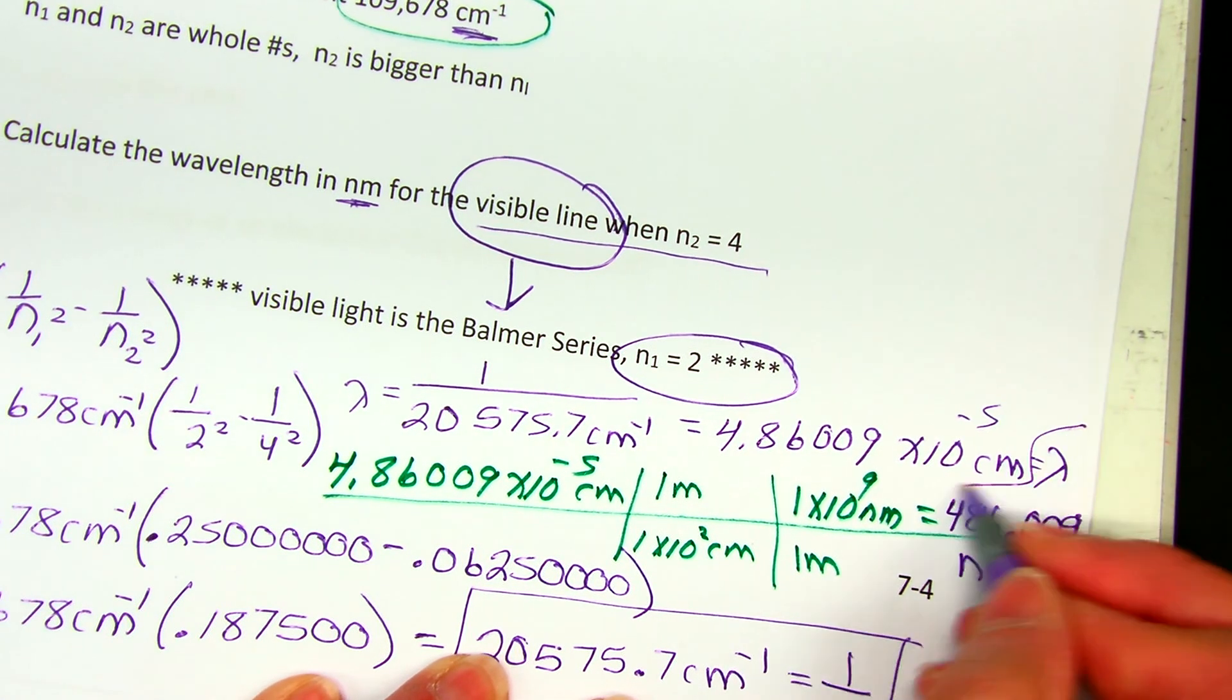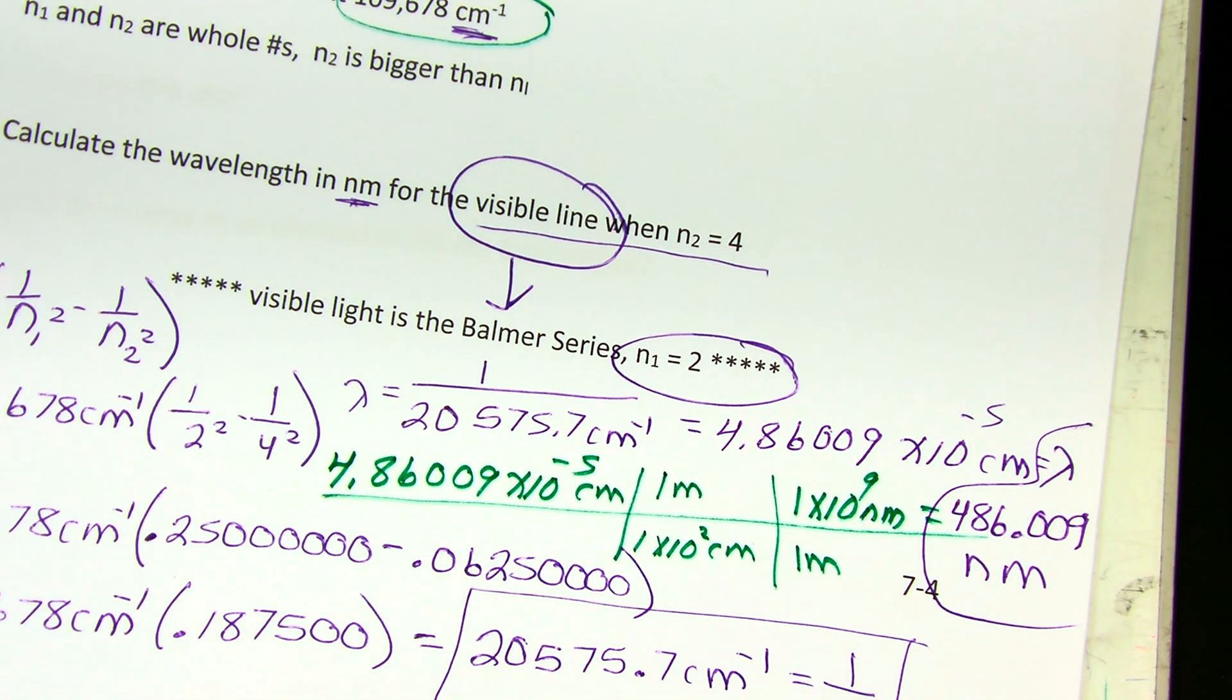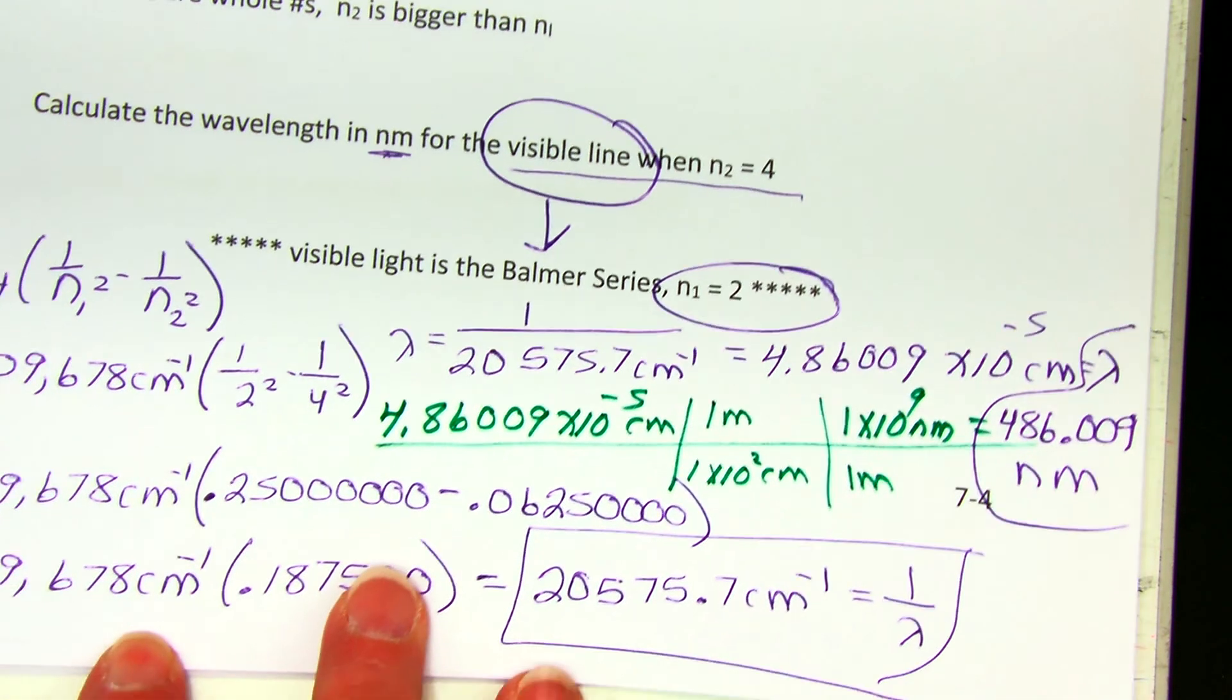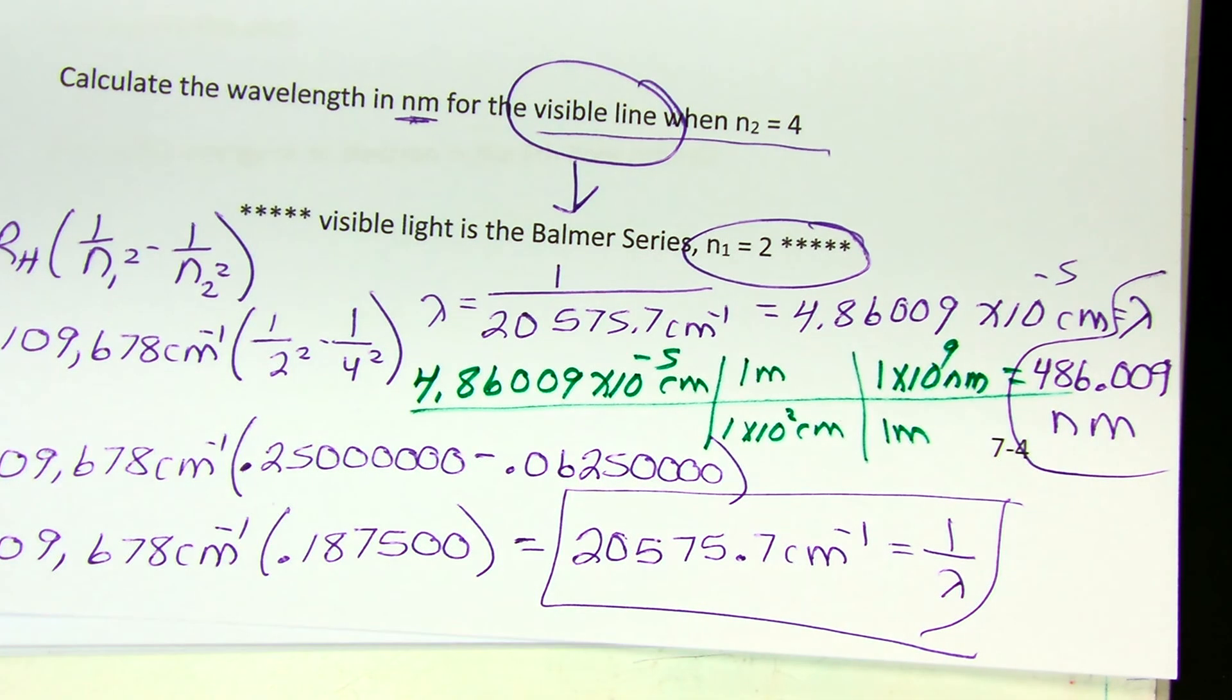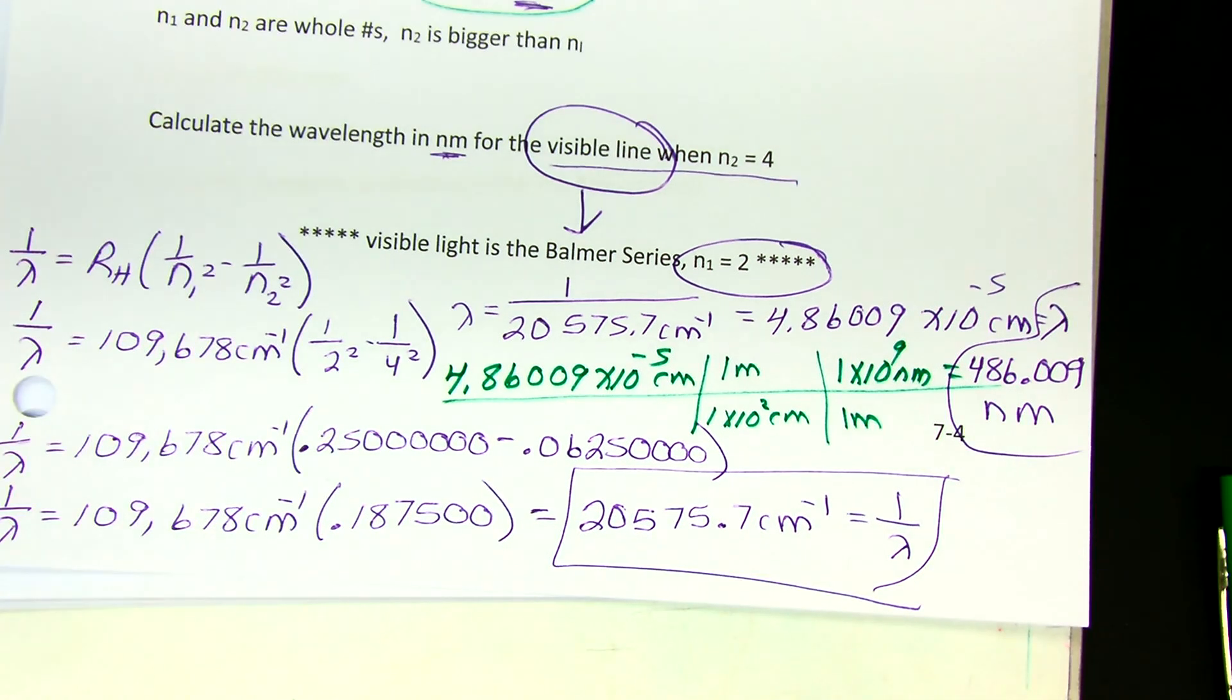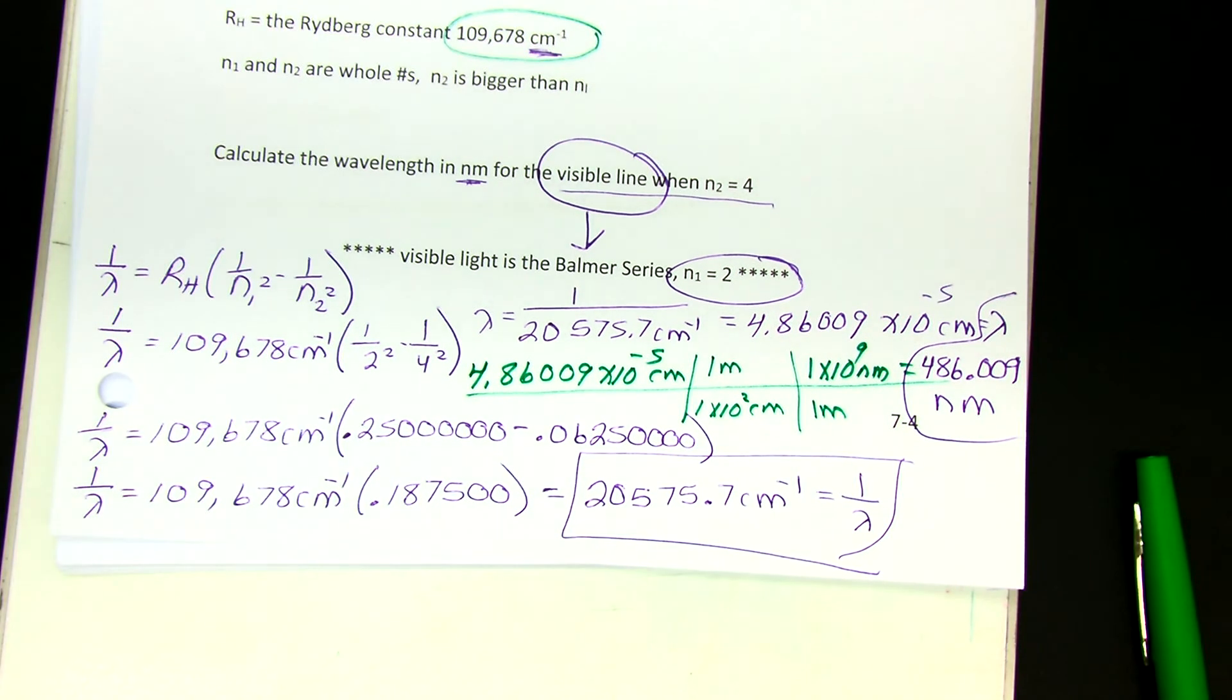It takes a lot of monkeying around to get the units right. The most important thing here is to make sure when you're doing this that you're paying attention and you realize you're starting off by calculating the wave number, the reciprocal of the wavelength, and then you have to convert that. So go ahead and do the problem on the next page. Let's just do this one at your seats.